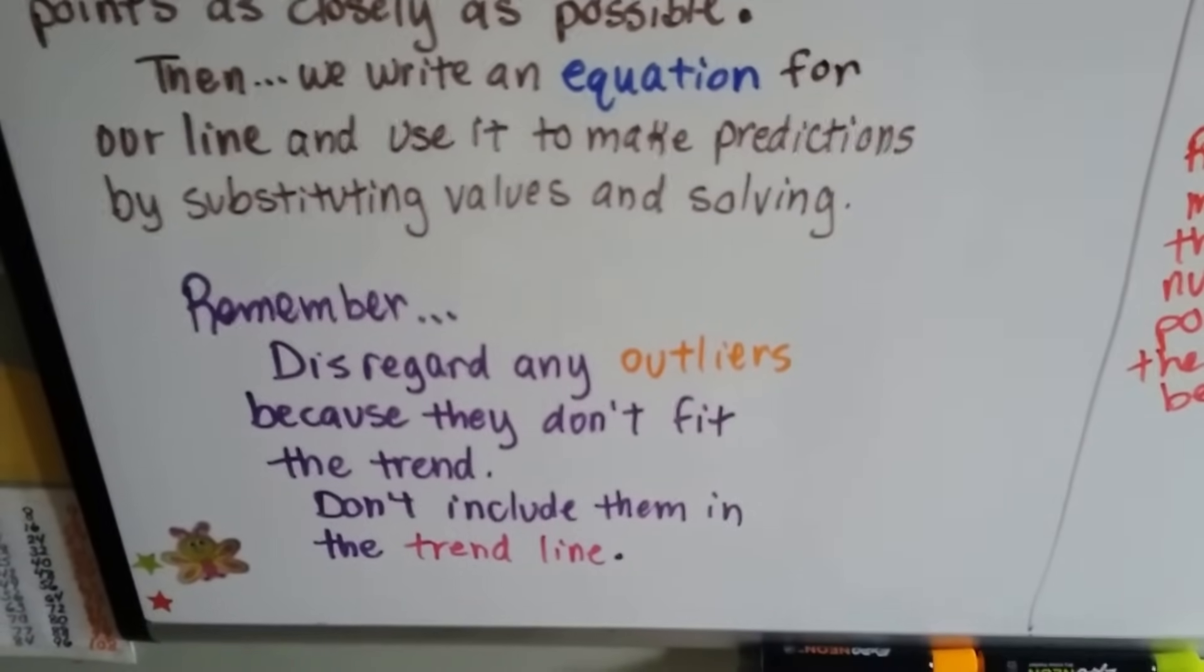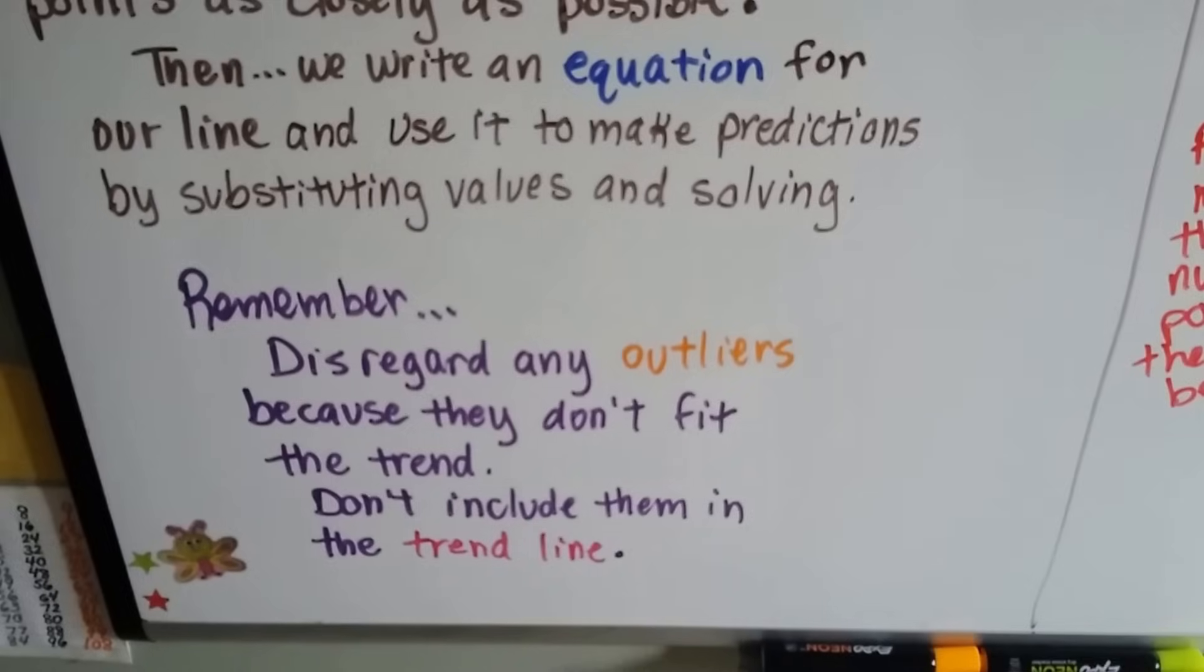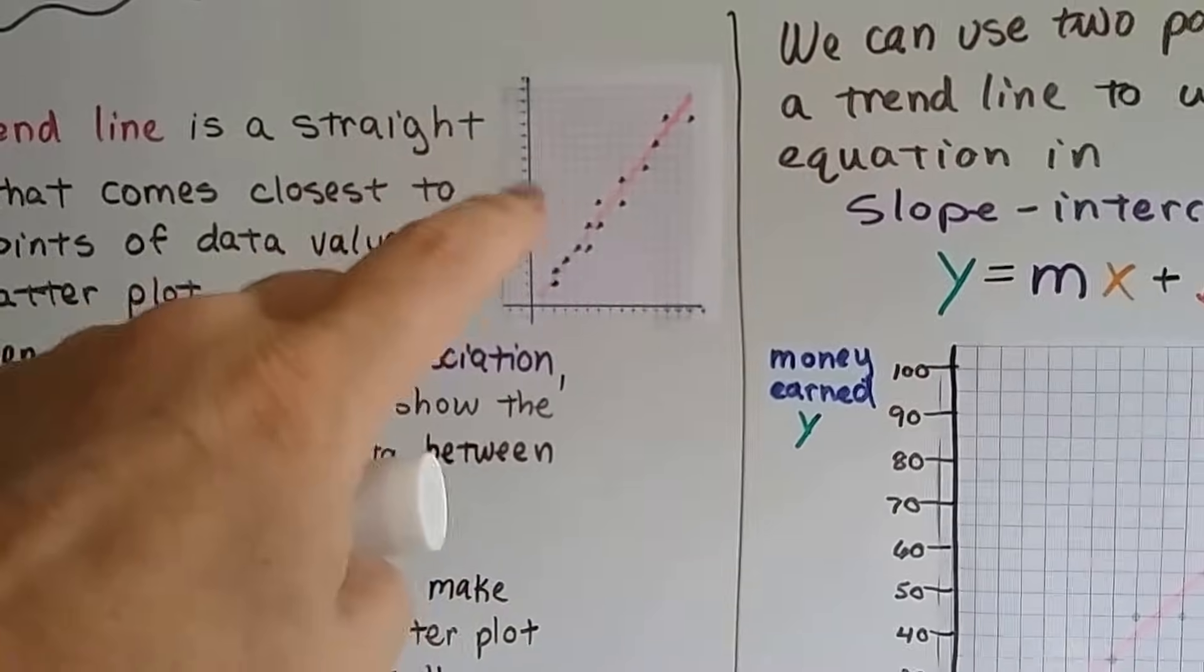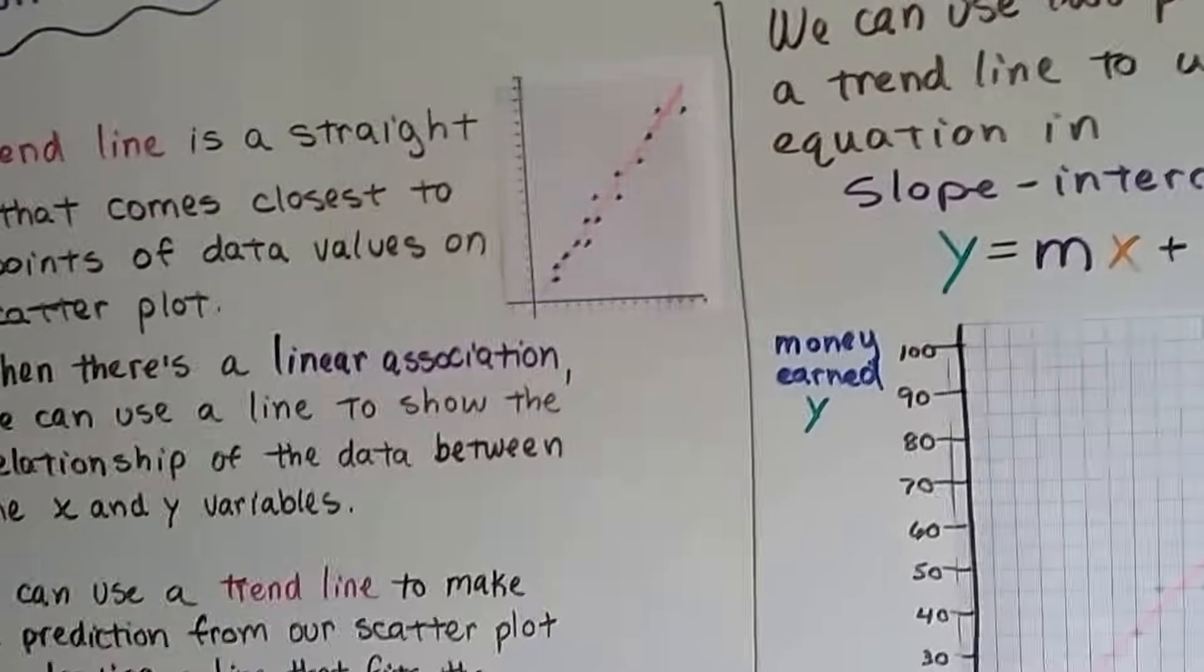And we have to remember, you disregard any outliers because they don't fit the trend. Don't include them in the trend line. So if we had an outlier way out over here, just ignore it and do our trend line.